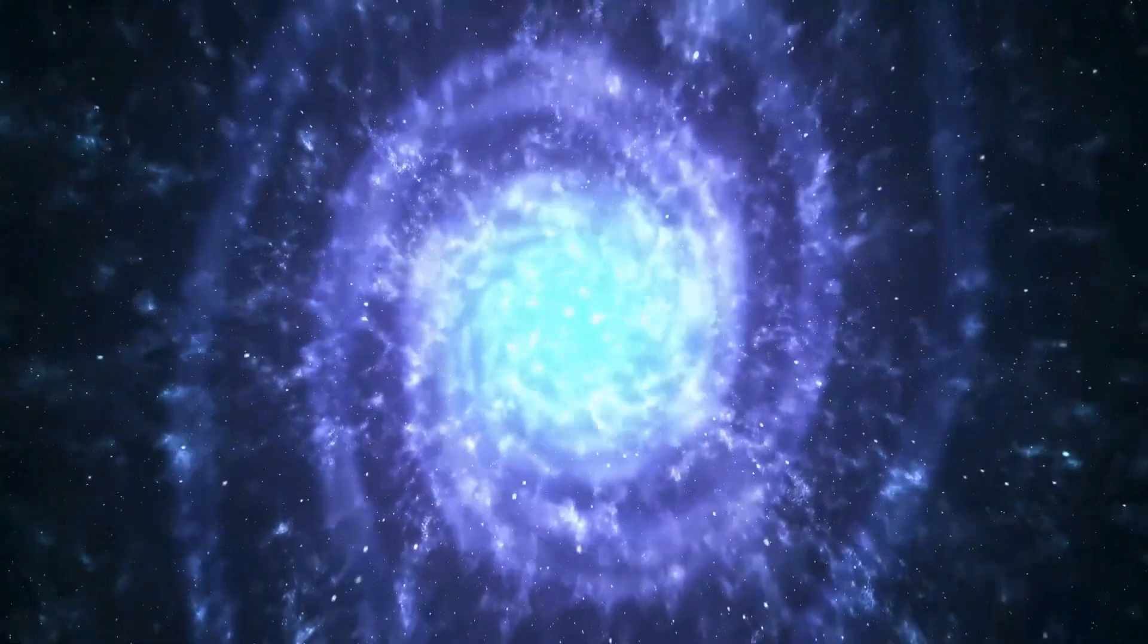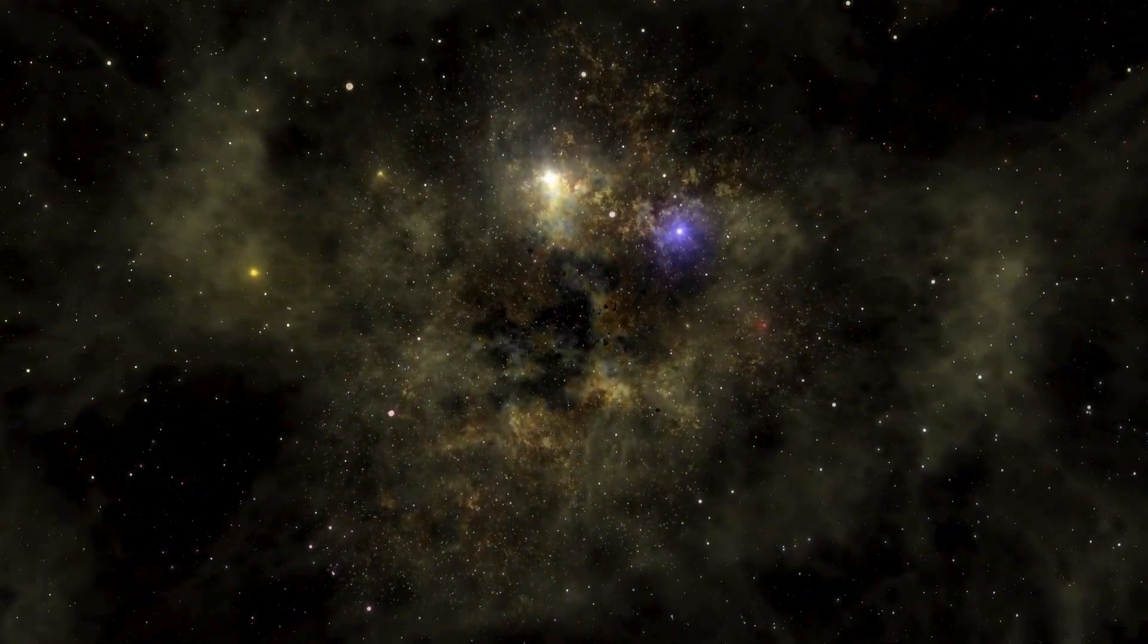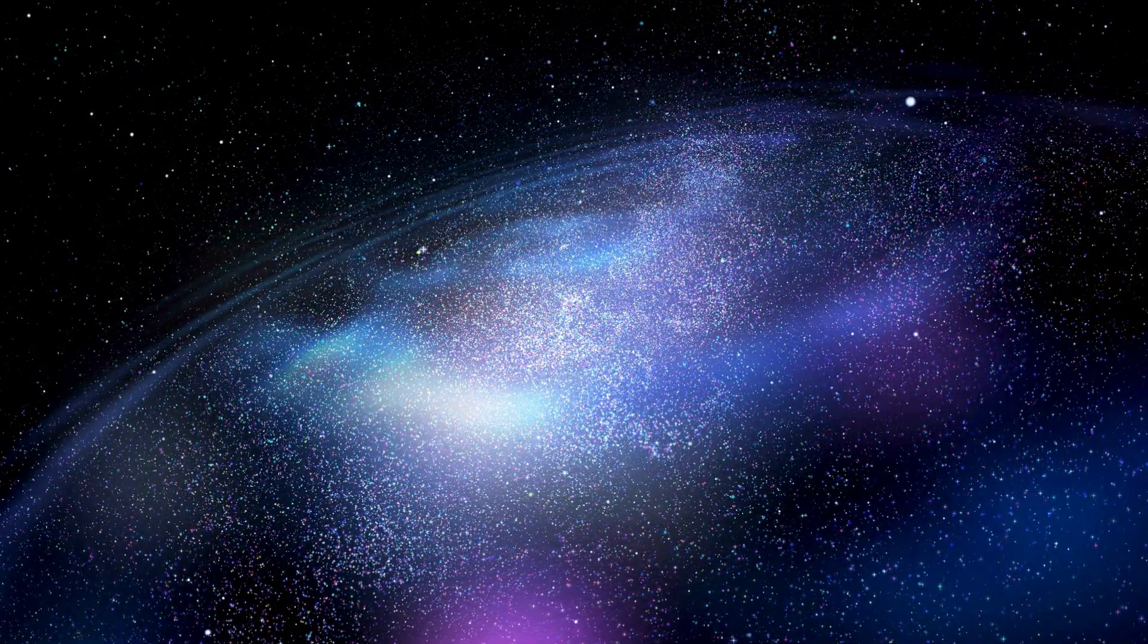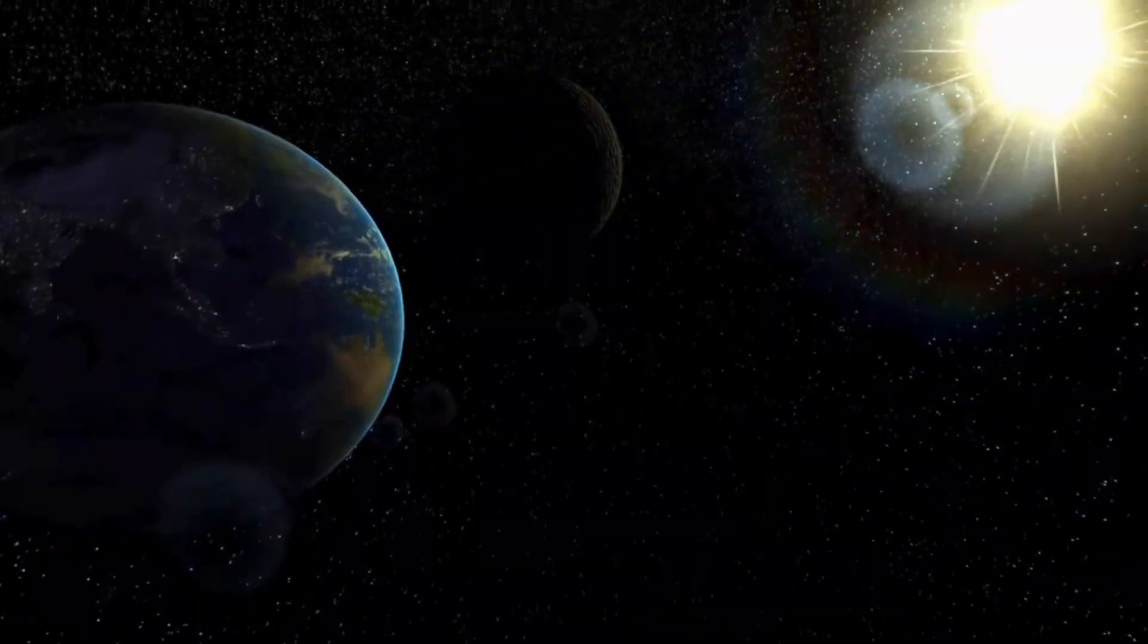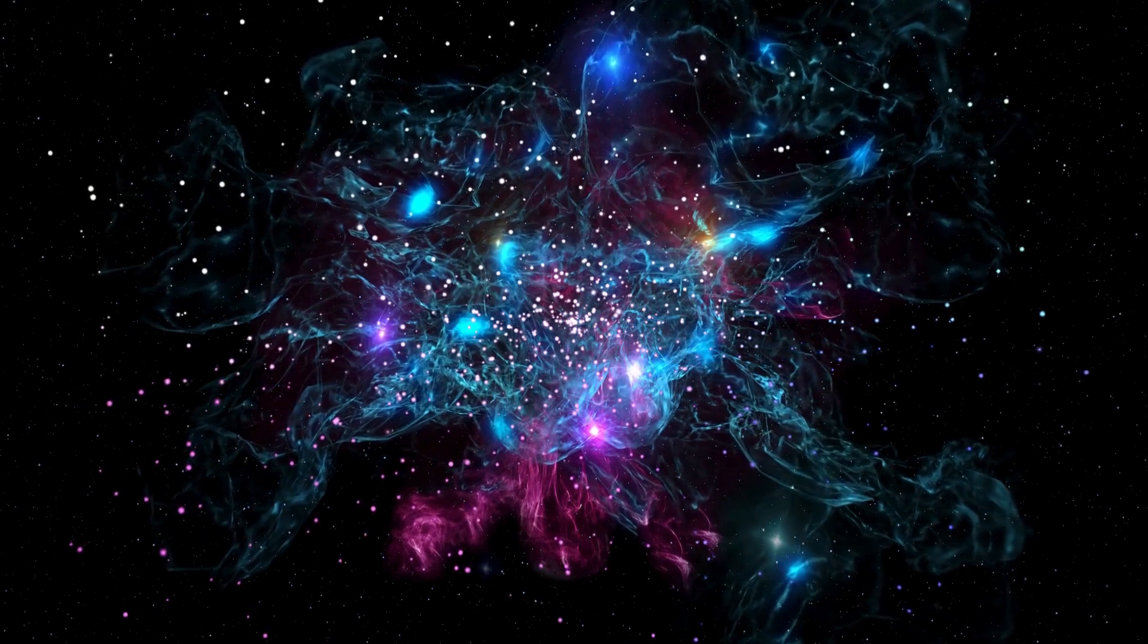When researchers examined hundreds of galaxies from the early universe, they found a surprising asymmetry. Roughly 60% of these galaxies spin in one direction, while only 40% rotate the opposite way.